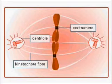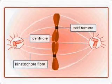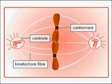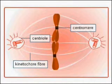Polar fibers extend from the two poles of the spindle towards the equator, while kinetochore fibers are attached to the centromeres of chromosomes and extend towards the spindle poles.